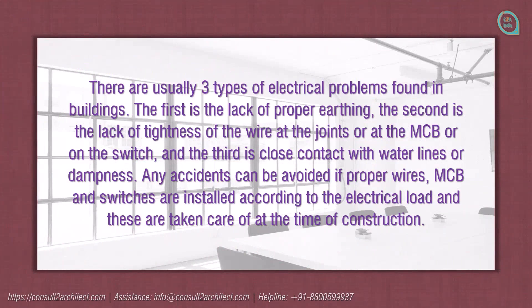There are usually three types of electrical problems found in buildings. The first is the lack of proper earthing. The second is the lack of tightness of wires at joints, at the MCB, or on the switch. The third is close contact with water lines or dampness. Any accidents can be avoided if proper wires, MCBs, and switches are installed according to the electrical load and these are taken care of at the time of construction.